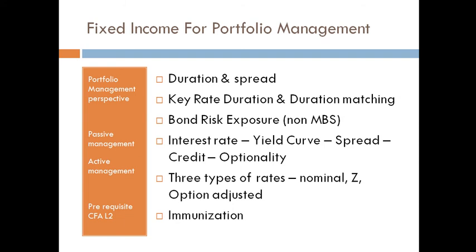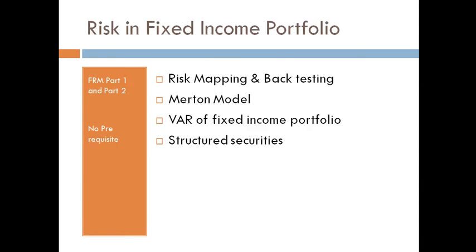Whenever you look at the effect, you could have interest rate changes in specific non-parallel shifts, changes of spread, credit quality, and so on — in both corporate as well as sovereign bonds — whereas in MBS you might have optionality.